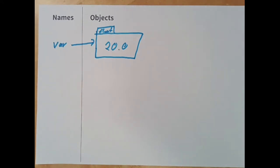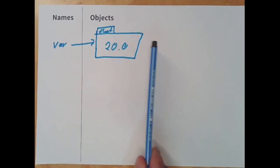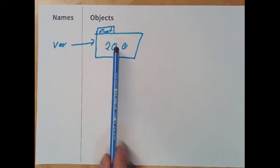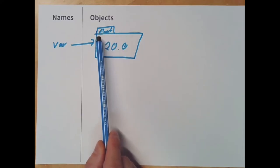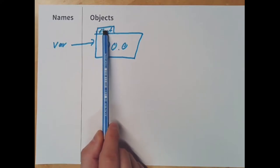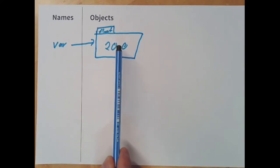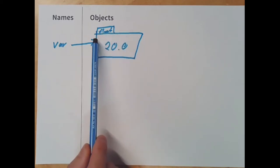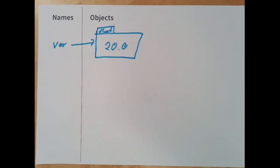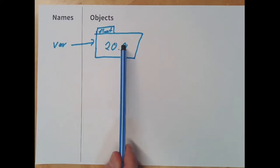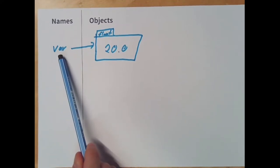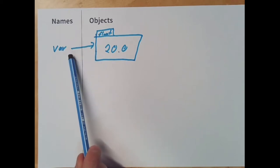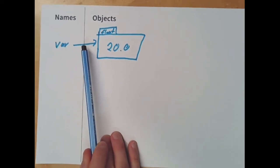Let me briefly reiterate certain terms here. On the right-hand side in the memory, we will have all the objects. All objects always have a certain starting location, which we call the memory address — that's the identity. Then all objects are going to have a type; here we have the floating point data type. And then all objects also have a value, which is what the ones and zeros mean inside the object. In this case, this means the number 20.0.